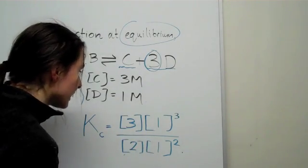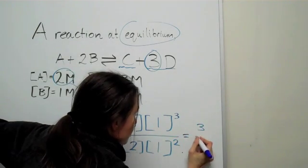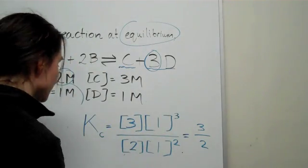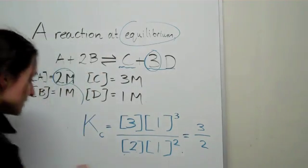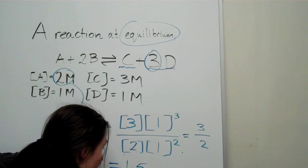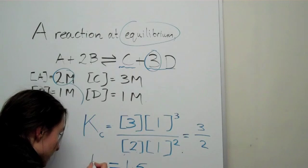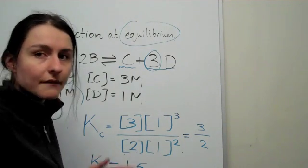That's just going to equal to 3 divided by 2, because 1 cubed and 1 squared is just 1. Eventually that answer becomes 1.5. This is the equilibrium constant, 1.5. But as I said last lesson, you have to figure out what the units are.